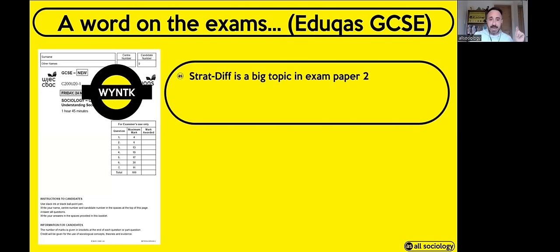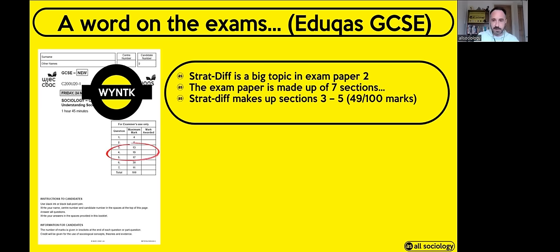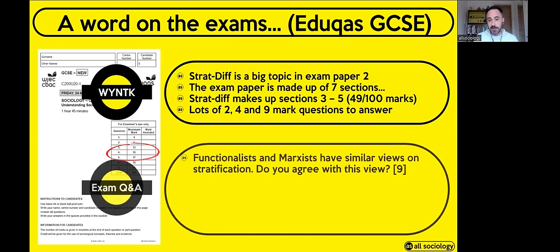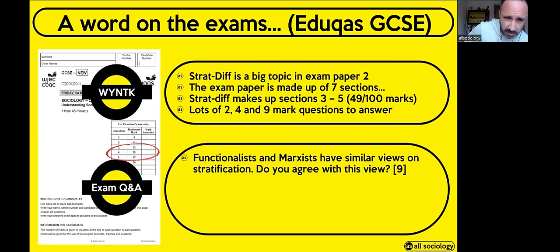The kinds of questions you'll get are two markers, four markers, occasional five markers, and nine mark questions — the biggest question in the stratification part of the paper. I'm going to go through a typical question — actually a 2020 question from Paper 2 of the GCSE EDUQAS spec. The question reads: 'Functionalists and Marxists have similar views on stratification. Do you agree with this view?' If you're taking this exam, pause the video now and have a think about how you might answer that question.